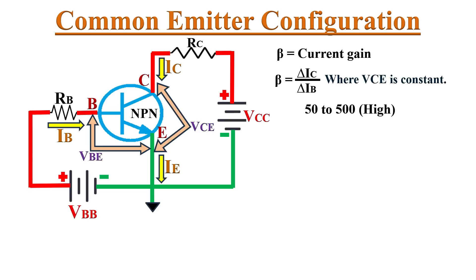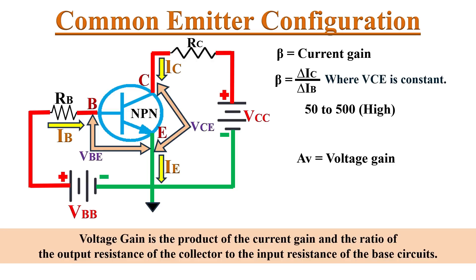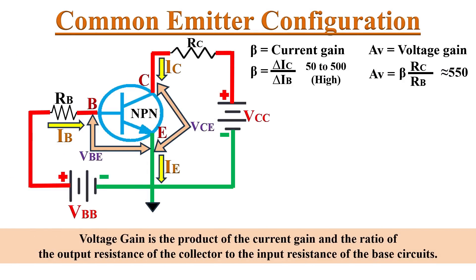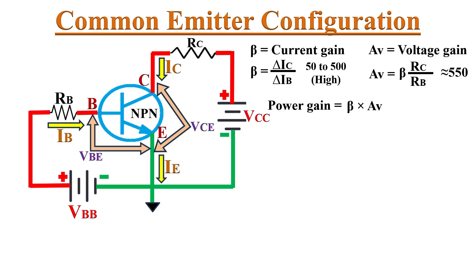Whenever we connect a load resistance or collector resistance RC in this configuration, we can obtain voltage gain. A higher RC value gives higher voltage gain, but excessive RC value leads to saturation. The voltage gain in common emitter configuration is approximated as the product of current gain beta and the ratio of output resistance RC to input resistance RB. In short, AV equals beta times RC divided by RB. The typical value is around 550. The power gain of the common emitter amplifier is the product of current gain beta and the voltage gain AV, with a typical value around 1000 — giving very high power gain in this configuration.